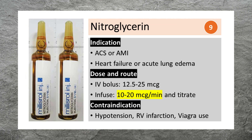Nitroglycerin is used to treat acute coronary syndrome, acute myocardial infarction, heart failure, or acute lung edema. It can be given as 12.5-25 mcg IV bolus, followed by 10-20 mcg per minute infusion. Nitroglycerin is contraindicated in patients with hypotension, RV infarction, or Viagra use.